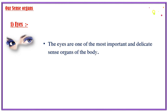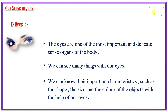Eyes. The eyes are one of the most important and delicate sense organs of the body. We can see many things with our eyes. We can know their important characteristics such as the shape, the size, and the color of the objects with the help of our eyes.